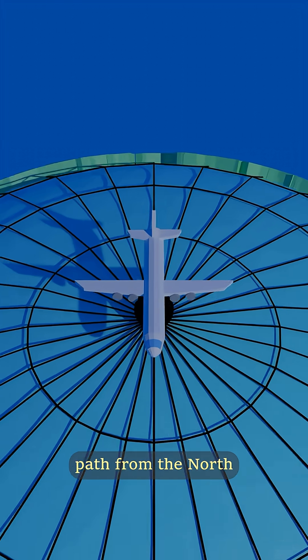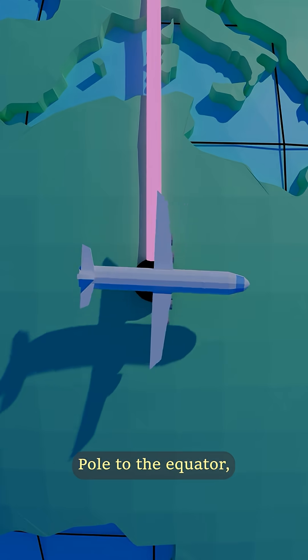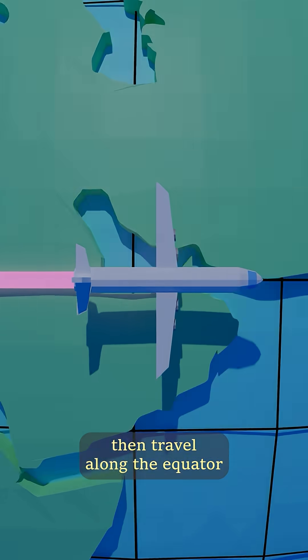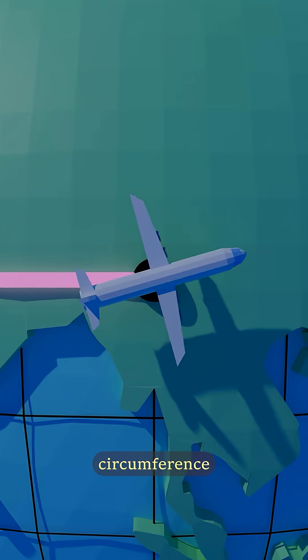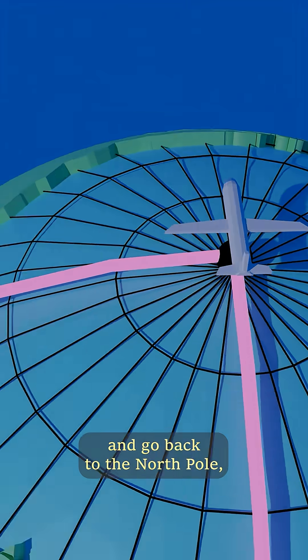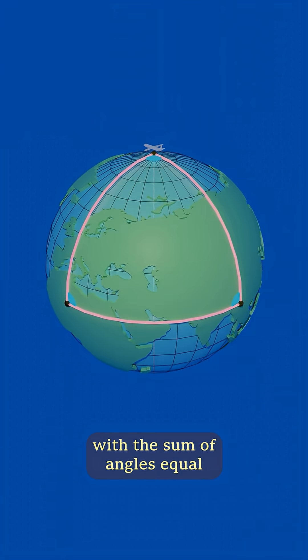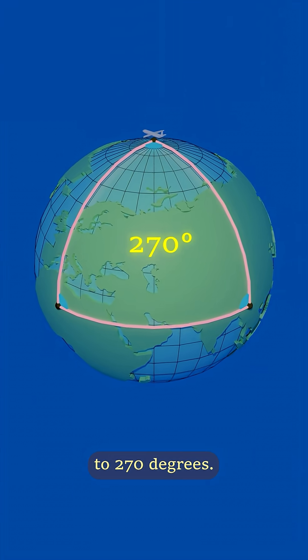So if you were to take the shortest path from the North Pole to the equator, then travel along the equator for one quarter of Earth's circumference and go back to the North Pole, you would make a triangle with a sum of angles equal to 270 degrees.